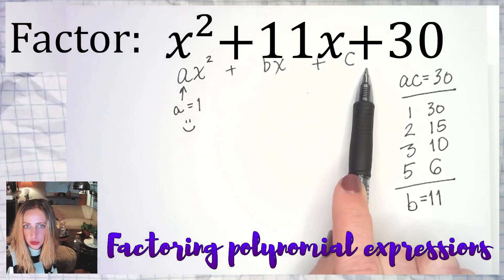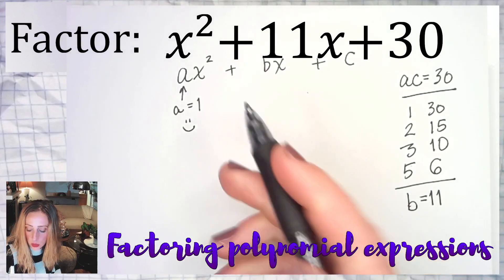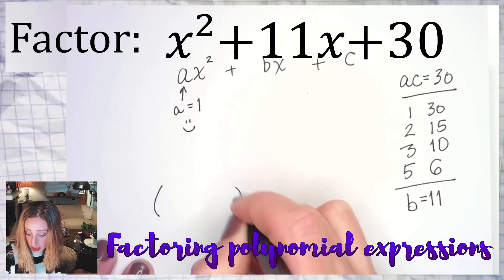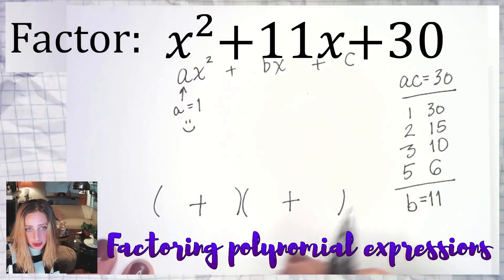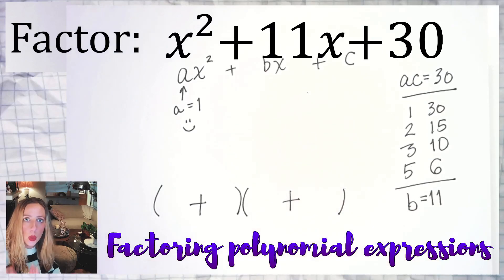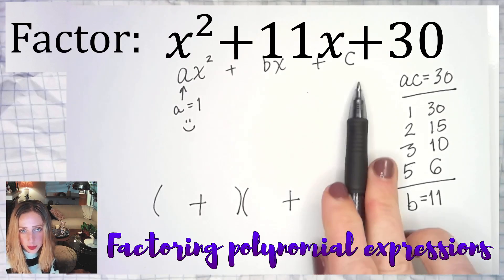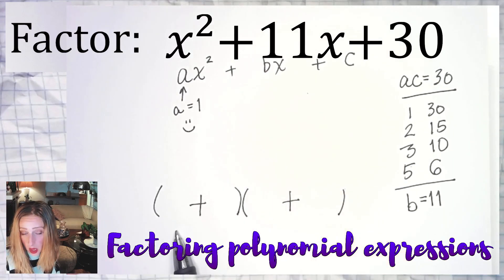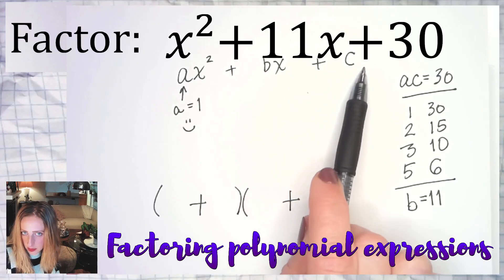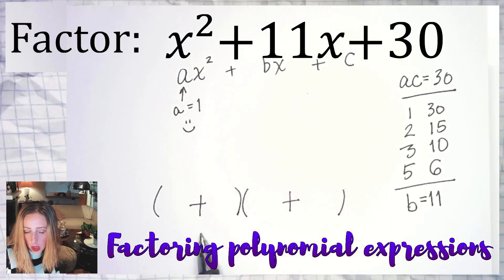If this is a plus sign right over here, that means when all is said and done and we're factored, that both of our factors, both binomials, will be combined with plus signs. If this is a plus sign but that one is a minus sign, that means they will both be minus signs. And if that's a minus sign, I don't care what that is, you'll have one of each.